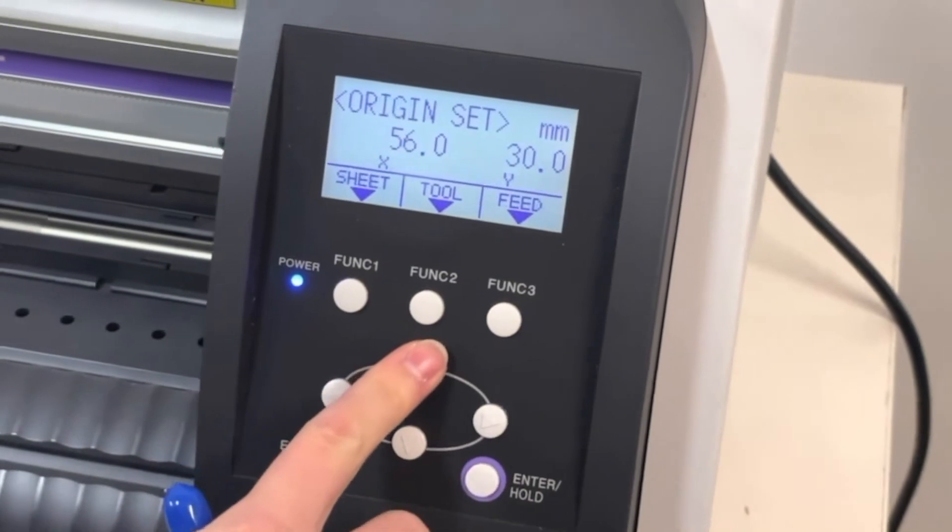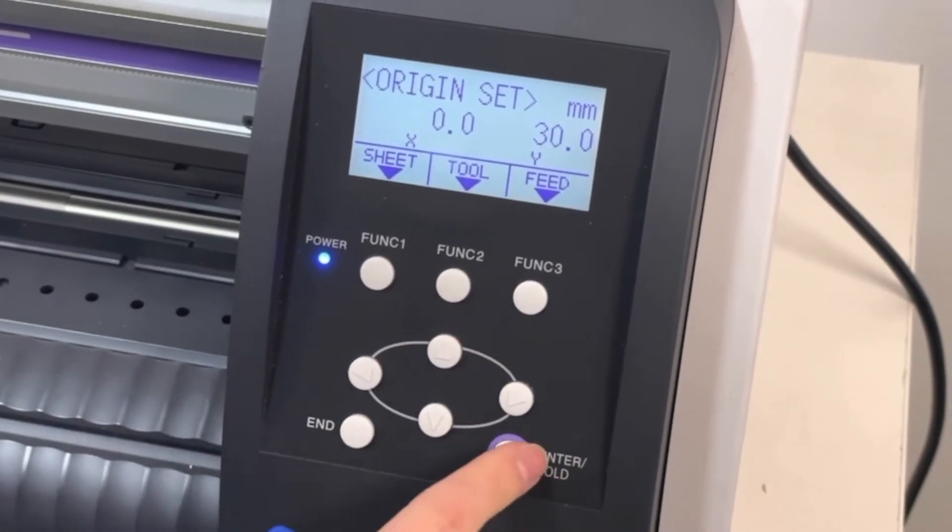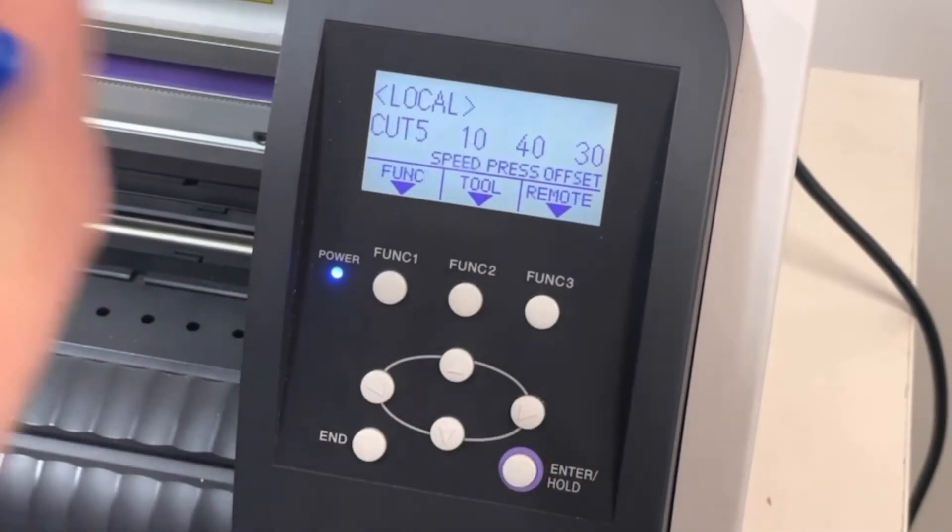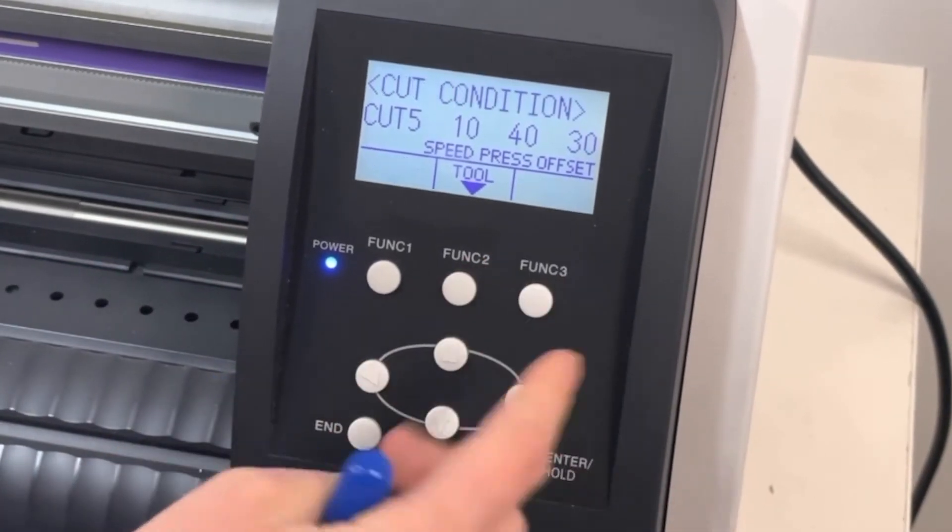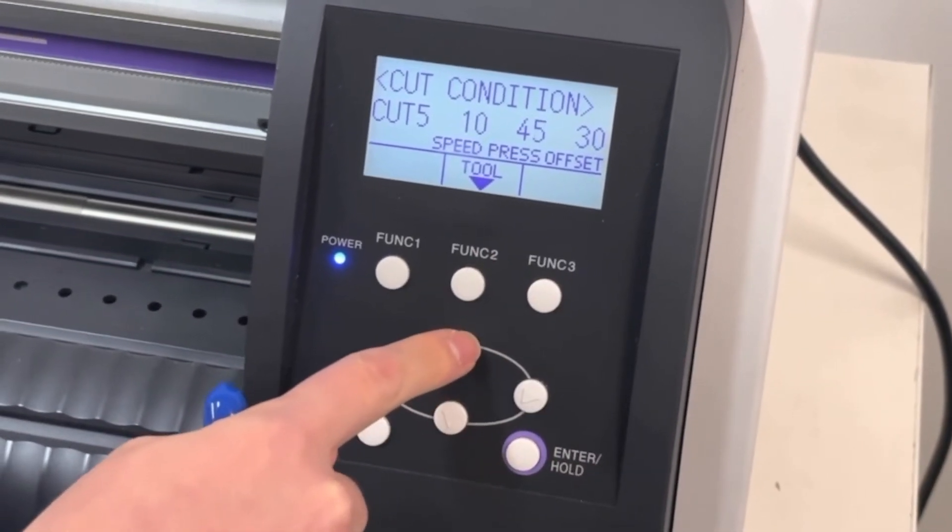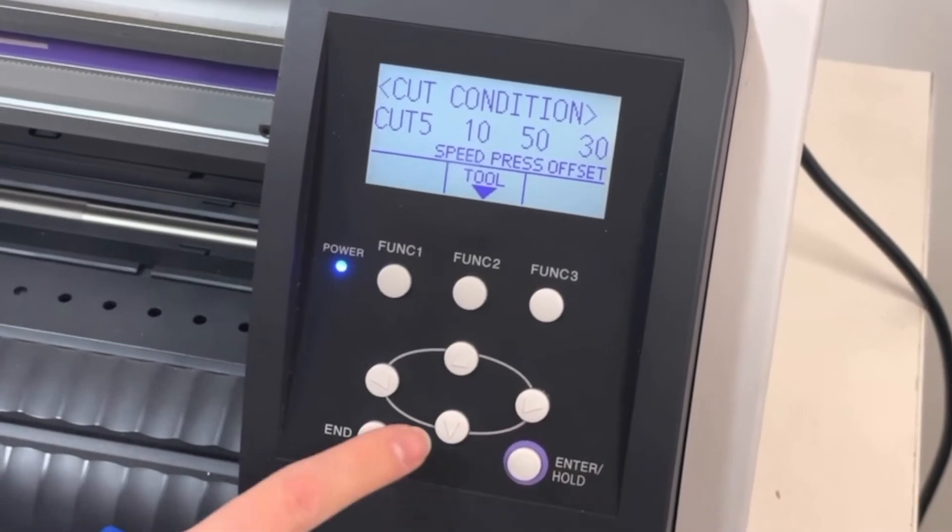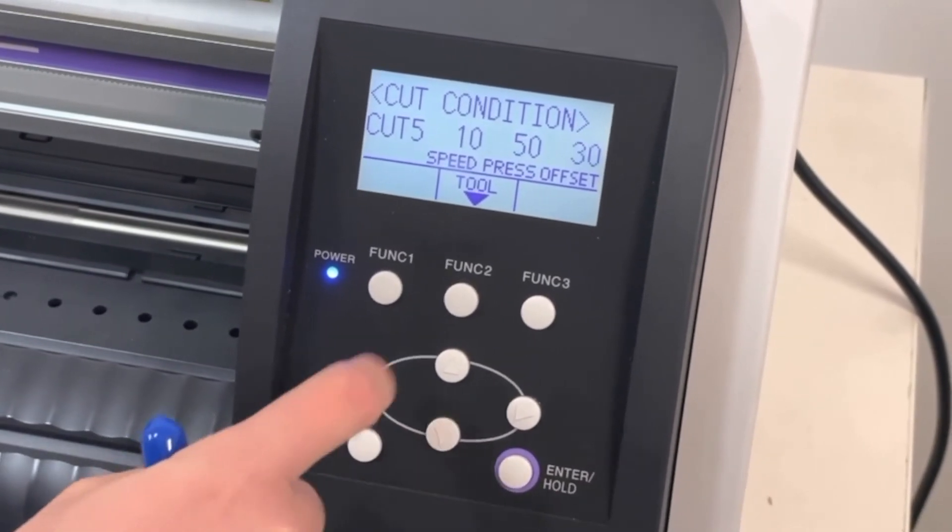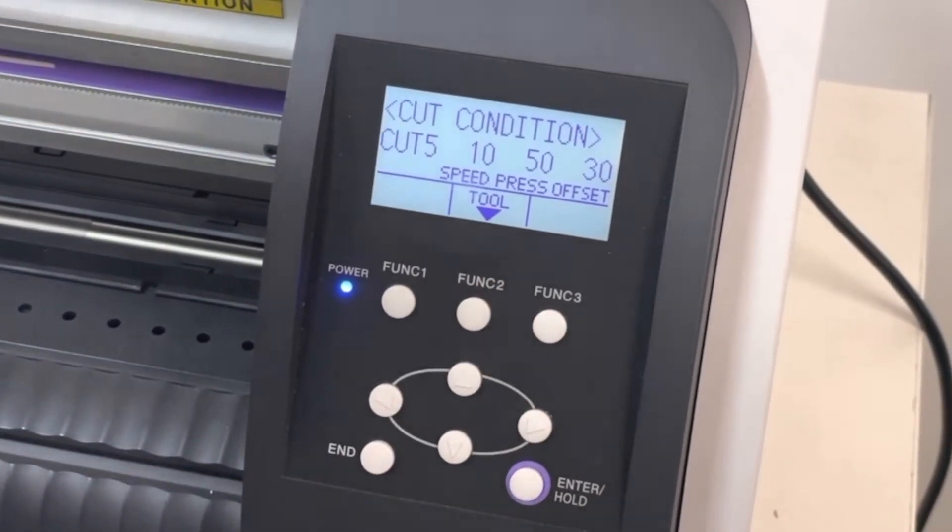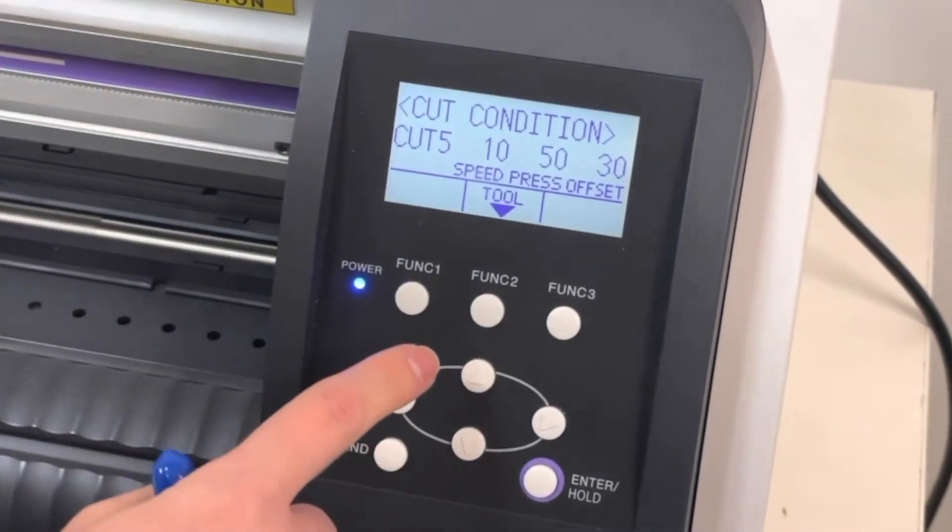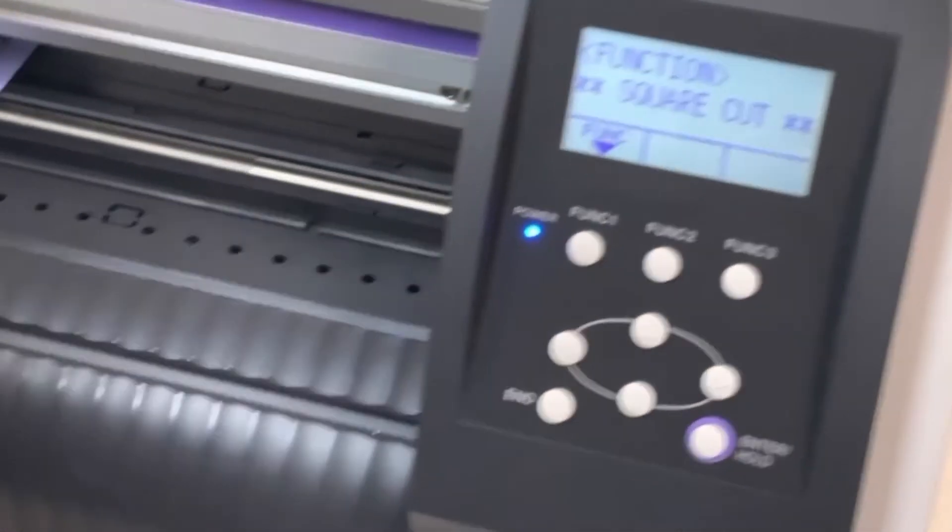You don't want to jump ahead and start increasing the pressure too much because you're sort of going from one extreme to the other. So it can be a little bit tedious going up by certain increments, but we're going to go up by 10. So now we're at 50 pressure. Another square cut.